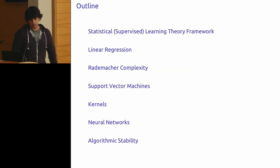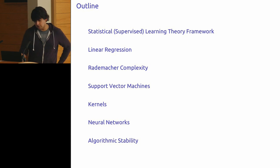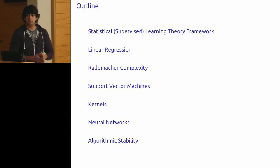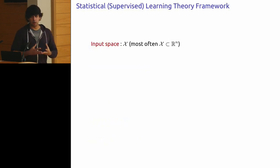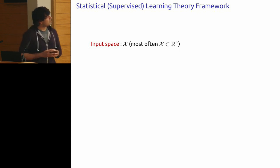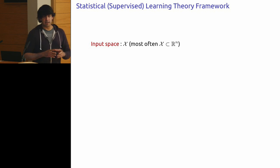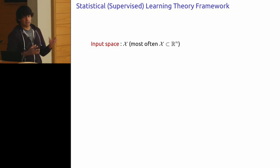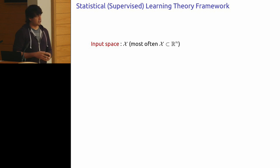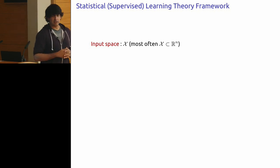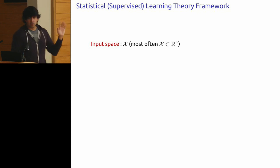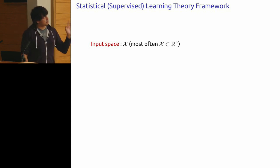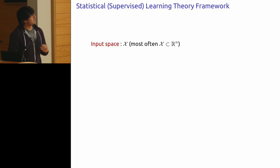Let me start straight away with the framework we're going to look at — this should seem familiar from what you've seen this morning. We'll think of having an instance space: think of this as where all our data is going to lie, at least the input part. This could be images, documents, whatever you think of as your data. We're going to think of this as being some subset of R^n for some n.